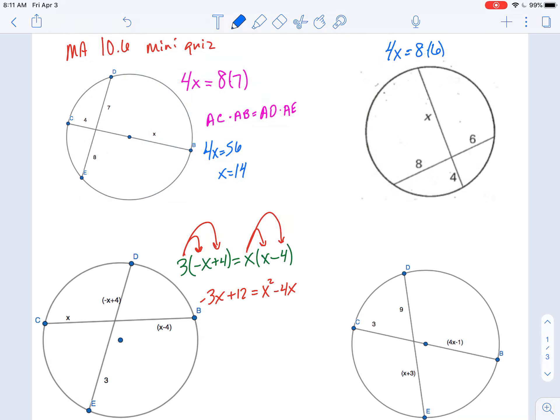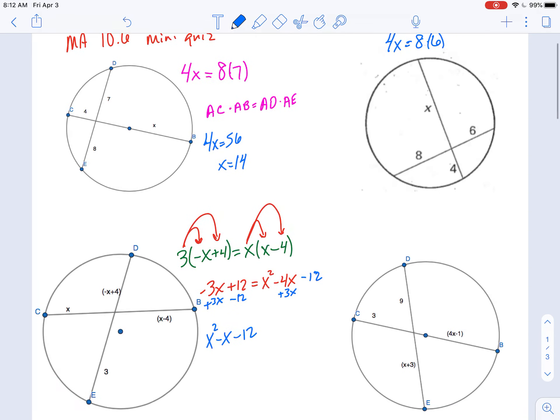Okay, and anytime you're given an x squared, anytime an x squared shows up, we're going to end up factoring, which means we need everything on the same side of the equal sign. So I'll add my 3x over, I'll subtract 12 over, and I'm left with x squared minus x minus 12.